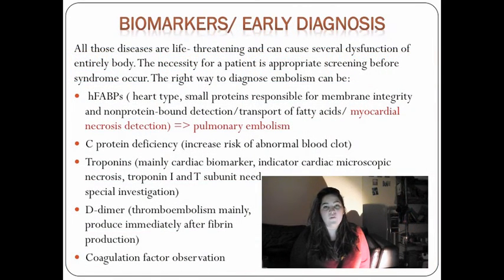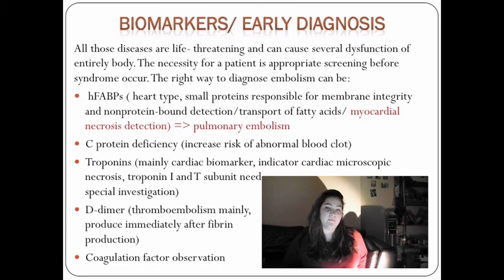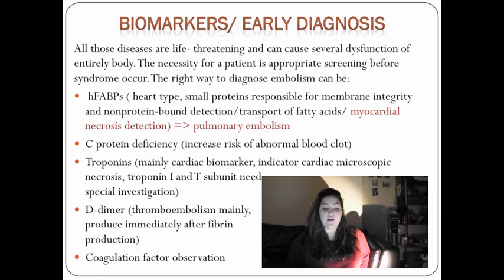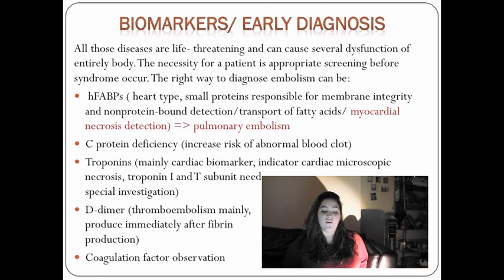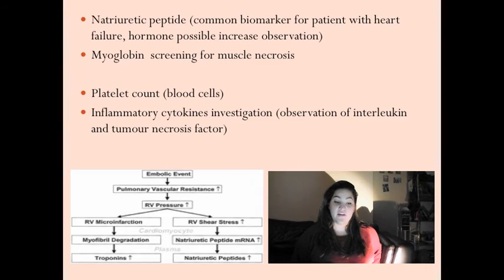Biomarkers for early diagnosis: All these life-threatening diseases can cause several dysfunctions of the entire body. There is a necessity for appropriate screening before the syndrome occurs. Key biomarkers include HFABPs, responsible for membrane integrity, non-protein bound detection, transport of fatty acids, and myocardial necrosis detection; C protein deficiency, which increases the risk of abnormal blood clots; troponins, mainly a cardiac necrosis biomarker; D-dimer for thromboembolism, produced immediately after fibrin production; coagulation factor observation; natriuretic peptide as a biomarker for heart failure; myoglobin screening for muscle necrosis; platelet count of blood cells; inflammatory cytokines investigation; and observation of interleukin and tumor necrosis factor.